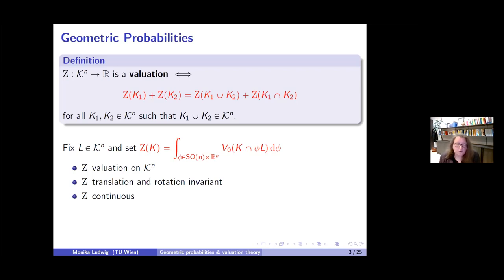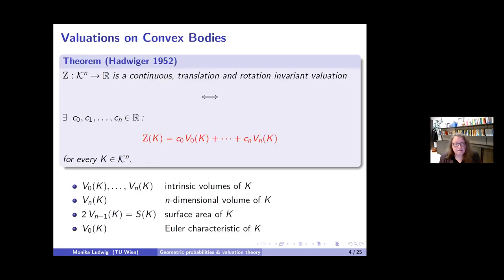Now we have the following amazing fact—Hadwiger's theorem, which gives a complete characterization of such valuations. If I have any functional on the space of convex bodies that is continuous, translation and rotation invariant, and a valuation, then it is a linear combination of these N+1 functionals called intrinsic volumes.